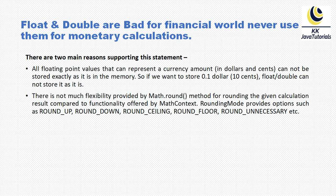Second, there is not much flexibility provided by the Math.round() method for rounding calculation results compared to the functionality offered by MathContext. The rounding mode in BigDecimal provides options such as rounding up, rounding down, rounding ceiling, rounding floor, and rounding unnecessary. These rounding options are provided by BigDecimal but not by Math.round() when dealing with the double data type.